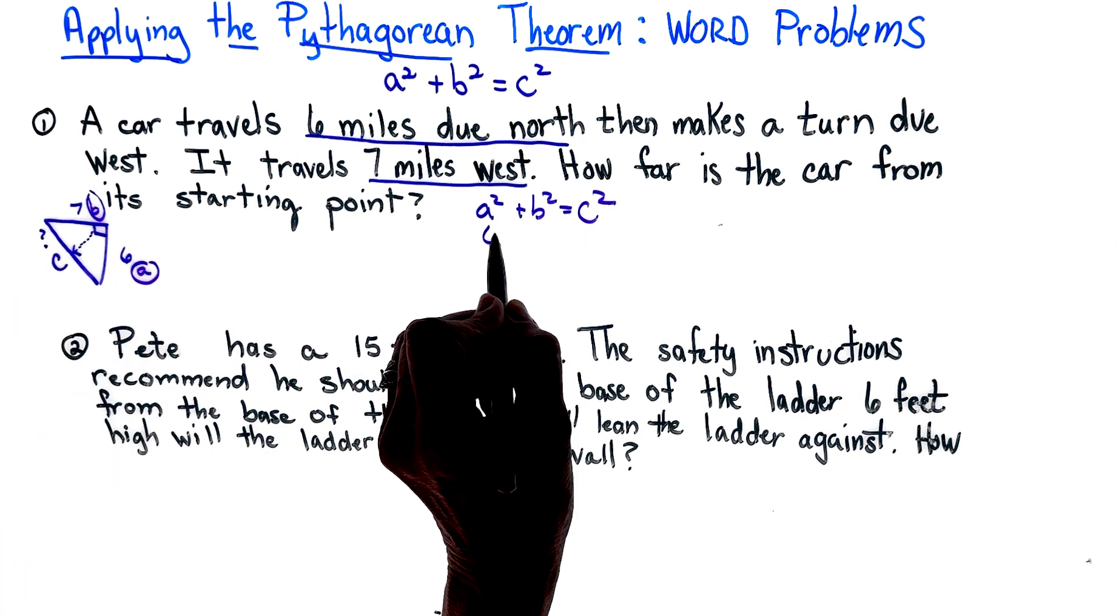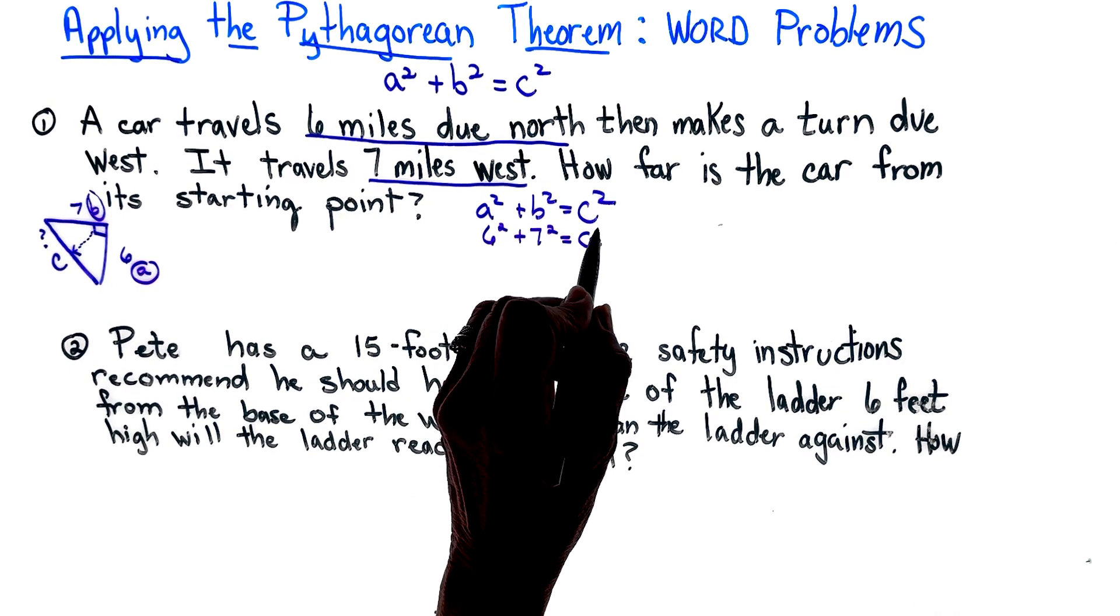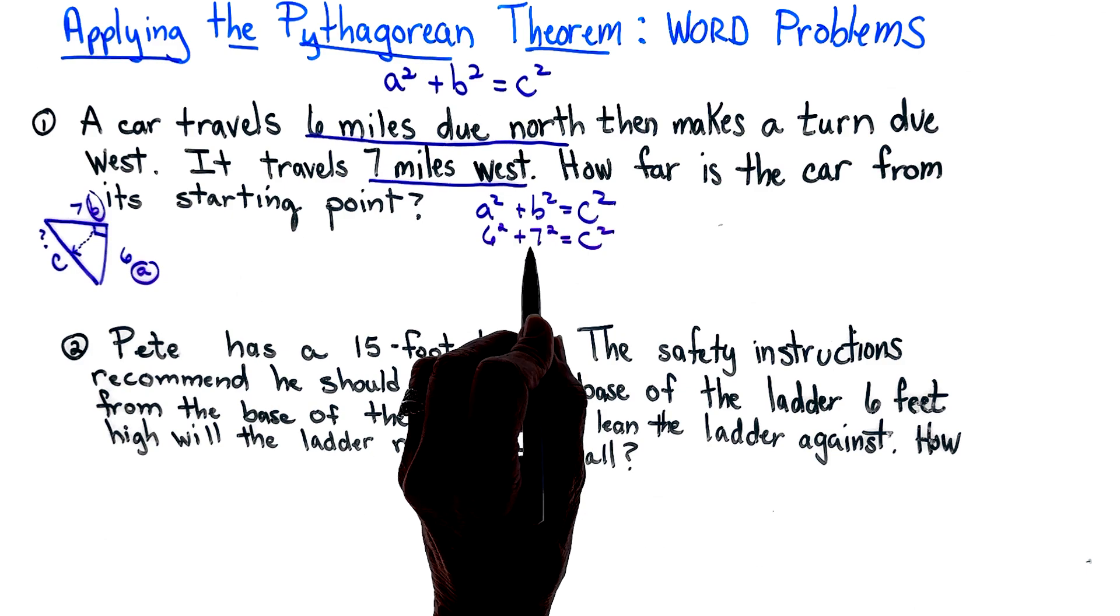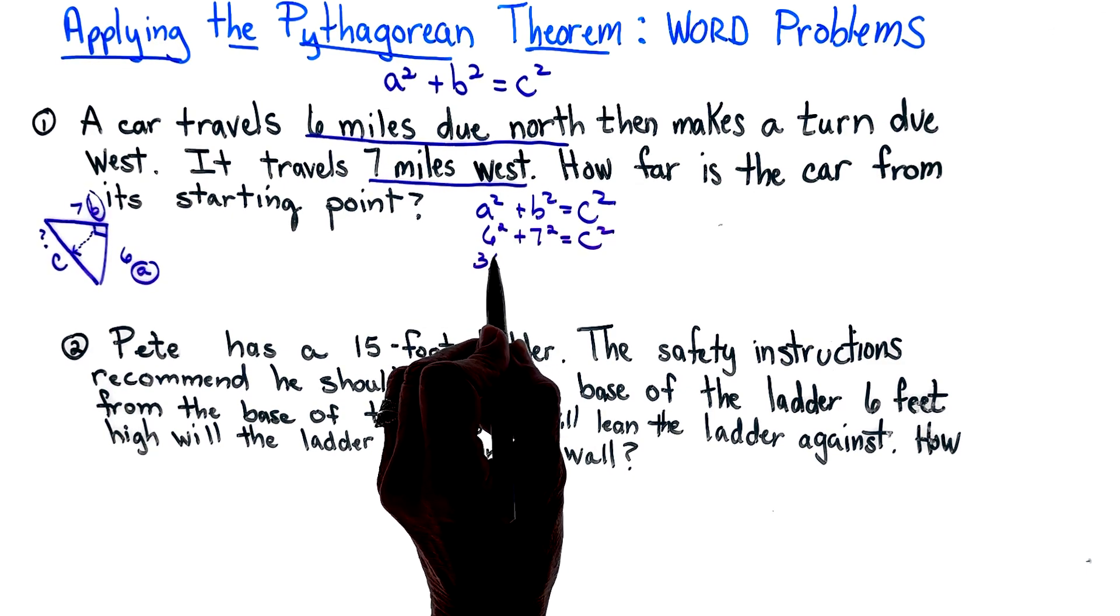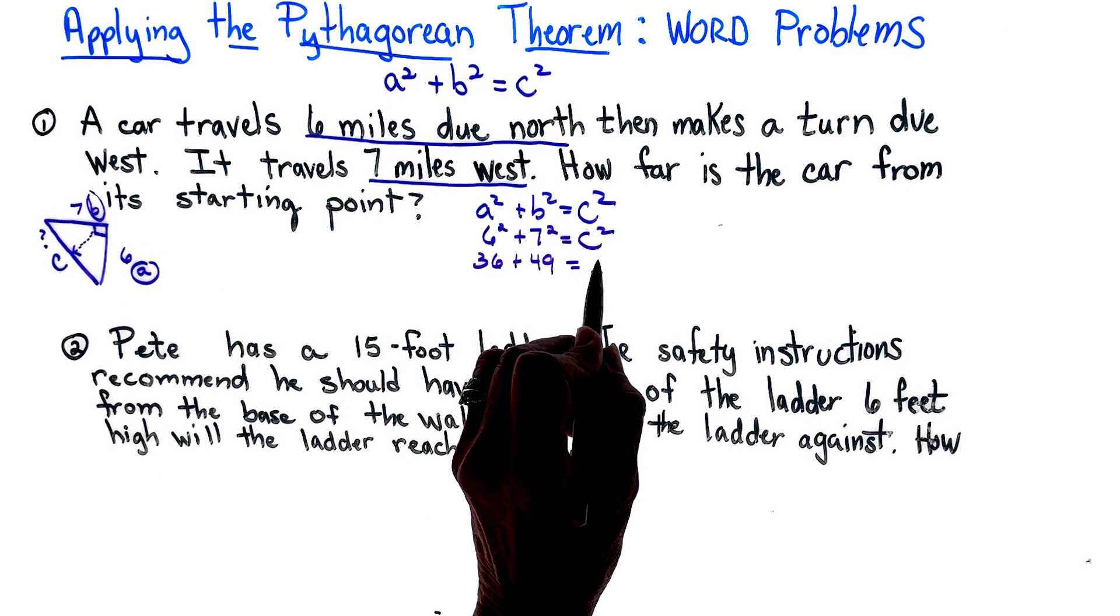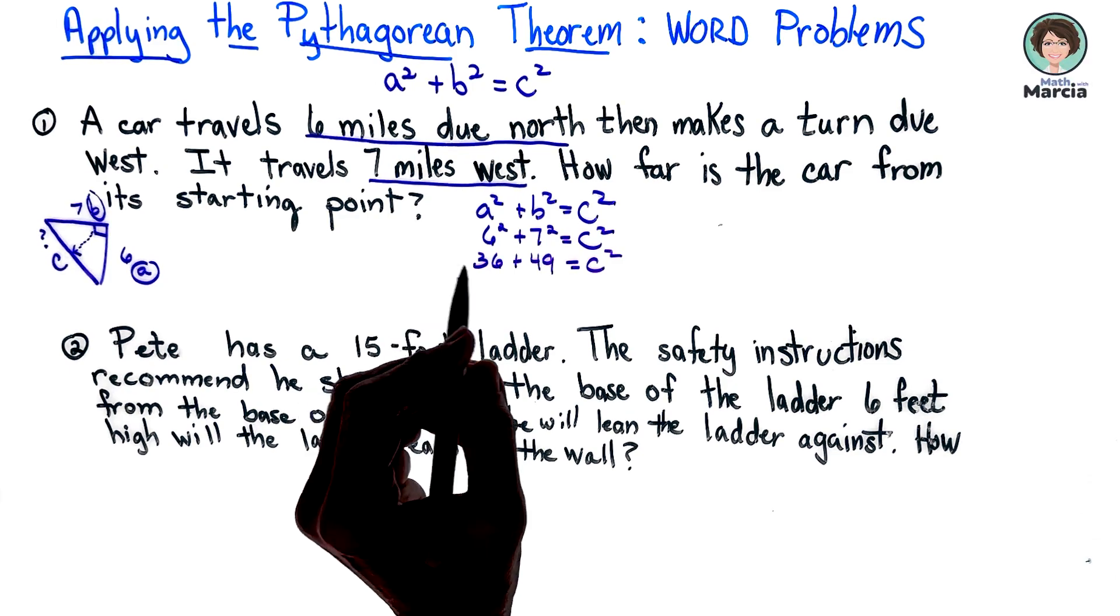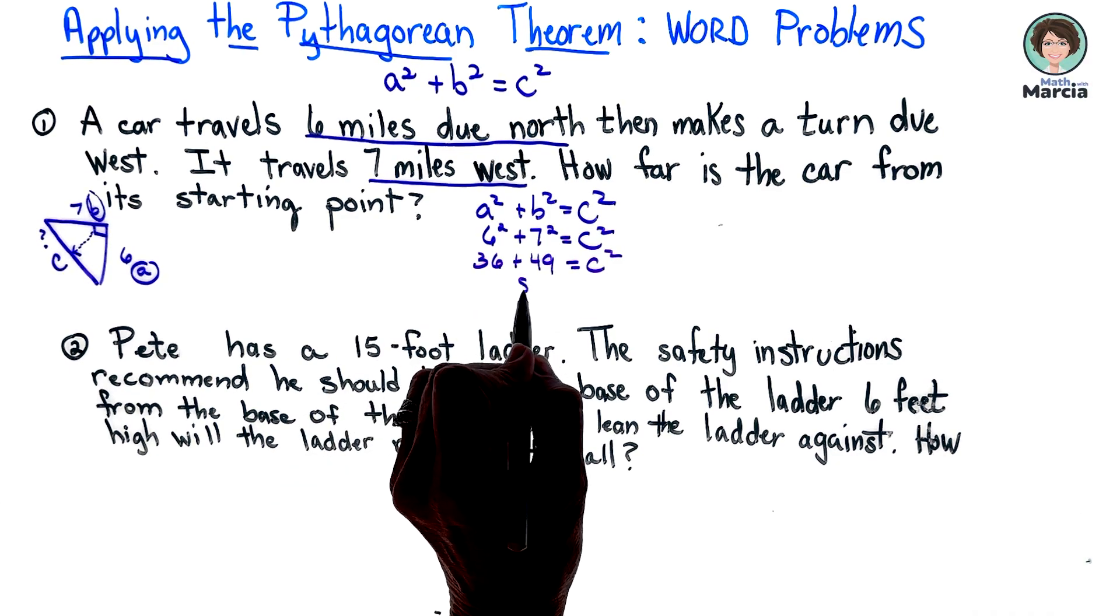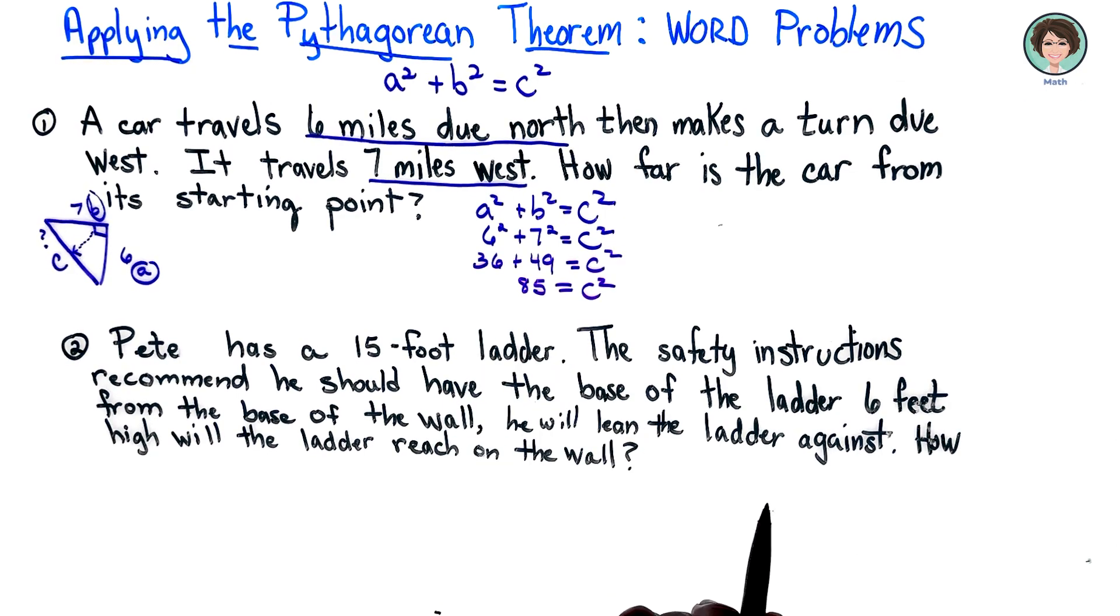Looking at this, it does not matter which is a and which is b. I am going to write six squared plus seven squared equals c squared. Remember we always must square these and add them before we can take the square root. So it's 36 plus 49 equals c squared.